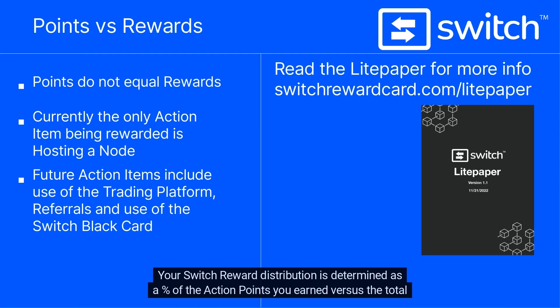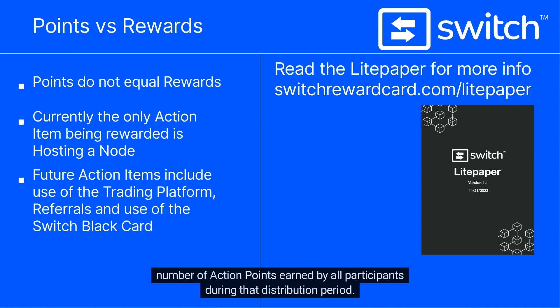Your Switch reward distribution is determined as a percent of the action points you earned versus the total number of action points earned by all participants during that distribution period.